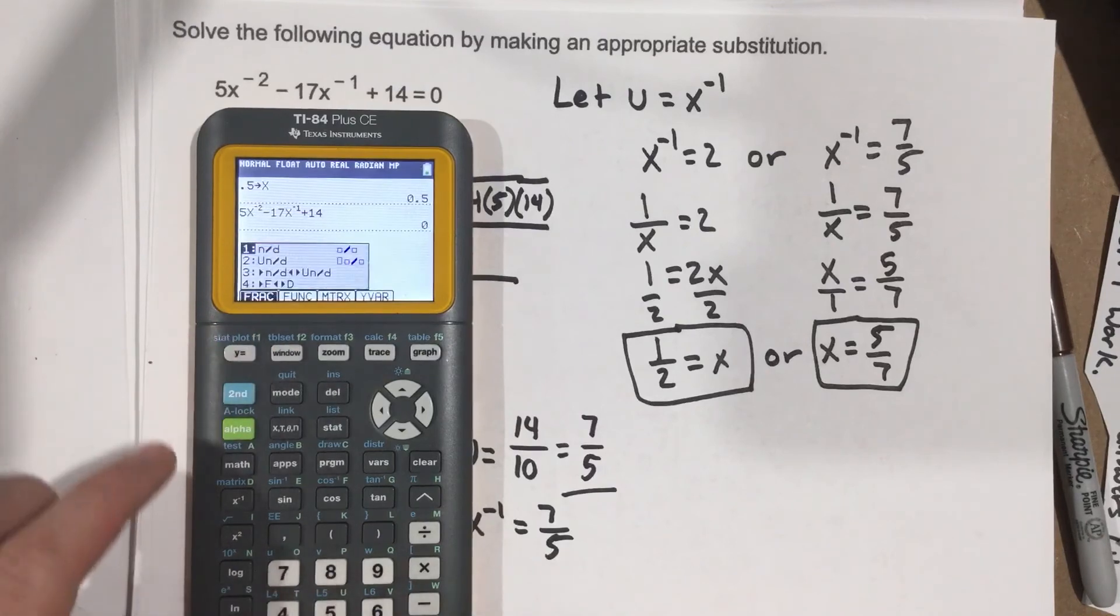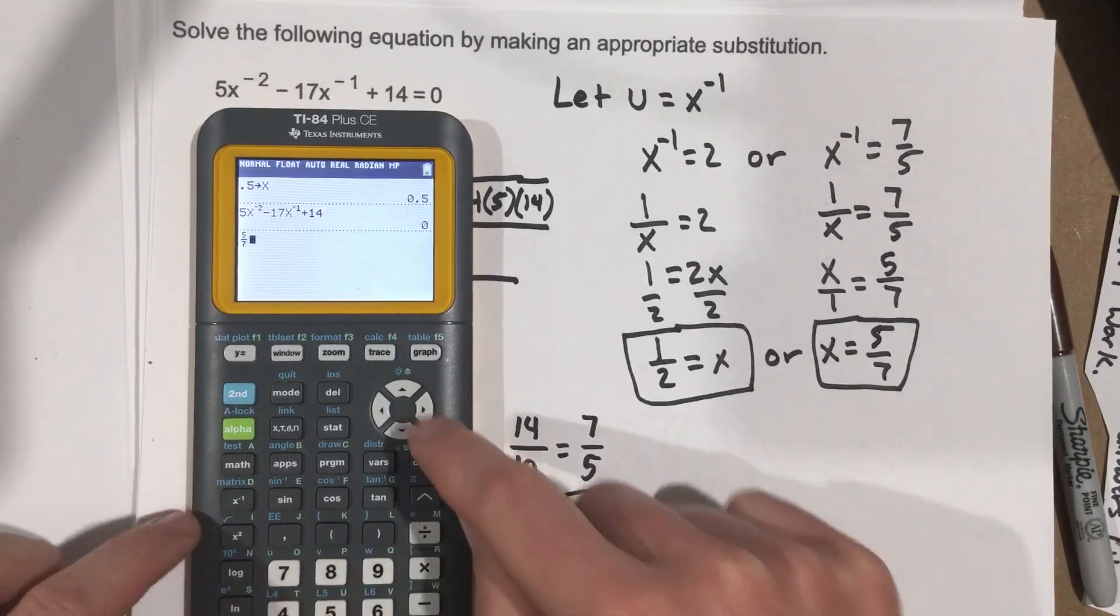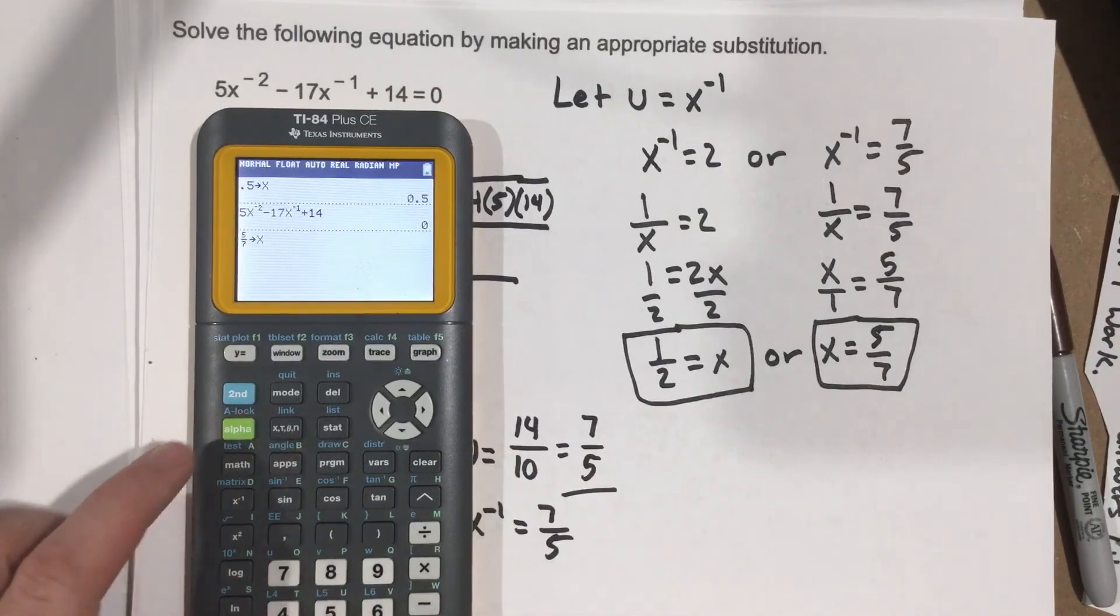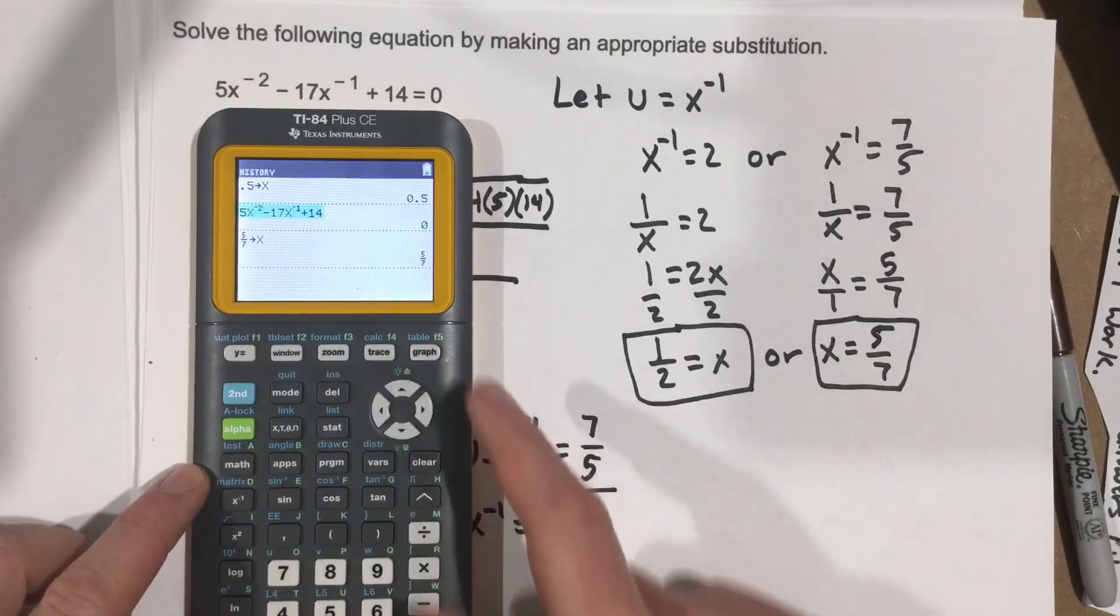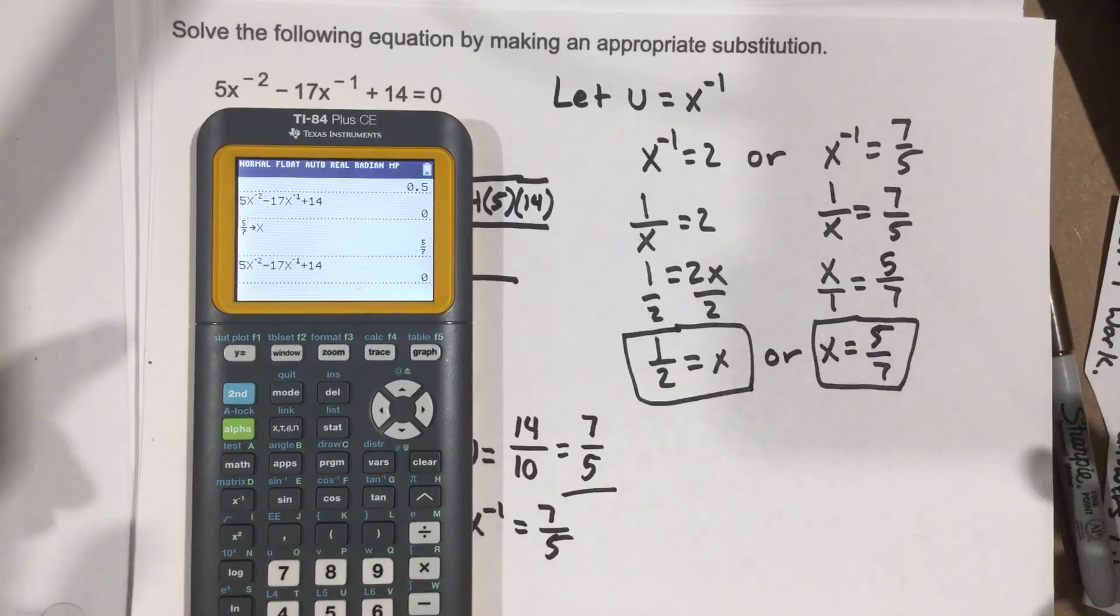And then let's take 5 sevenths. So let's do a fraction. 5 over 7. We're going to store it as x. And grab that equation. We get 0 as well. Both of those are solutions.